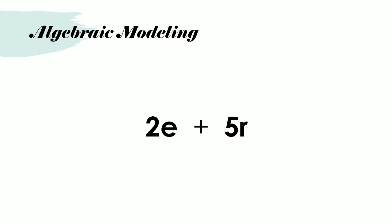But can we use any other variables? Yes, we could have used any other variable. If I were to use X to represent the eraser and Y to represent one ruler, then we would have had 2X plus 5Y.